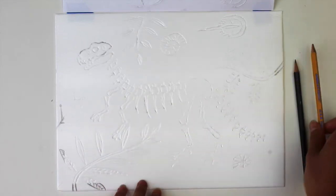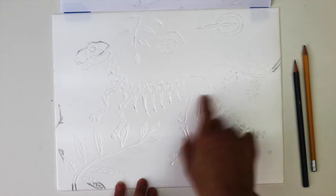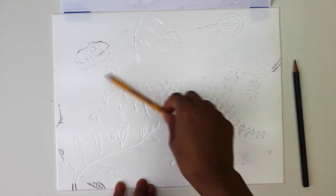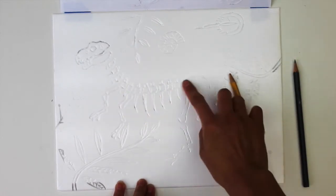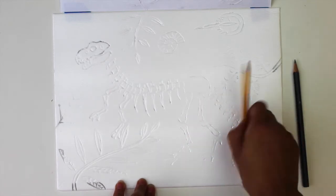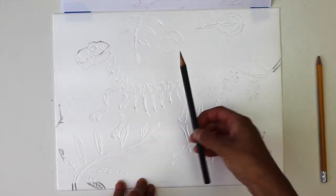We'll use a dull pencil to make thicker lines and a sharp pencil for thin lines. For the dinosaur, outline with the dull pencil and etch in all the bones. Then for the plants and fossils, re-outline with the sharp pencil.